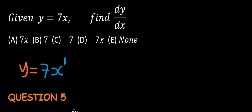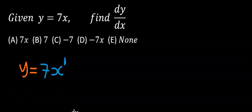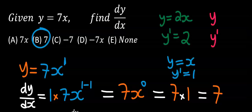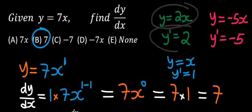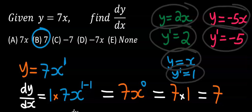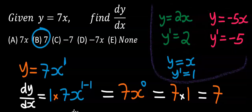Next, 7x is the same thing as 7x to the power of 1, and here our answer is 7, which is option B. Always remember: if you differentiate 2x your answer is 2, if you differentiate minus 5x your answer is minus 5, and if you differentiate x your answer is 1.